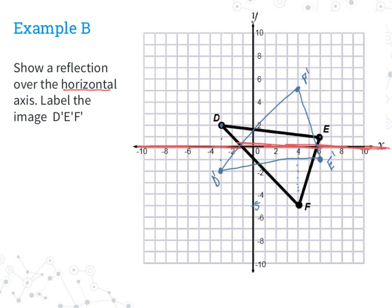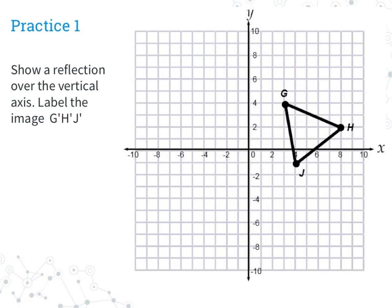Now let's try some practice problems on your own. Practice number one says: show the reflection over the vertical axis and label the image G prime, H prime, J prime. Pause the video now, then press play again to see if you are right. How did you do? Notice the points should line up — if G is at positive 3, positive 4, then G prime is at negative 3, positive 4. If yours looks like mine, great; if not, go ahead and make sure that it does.